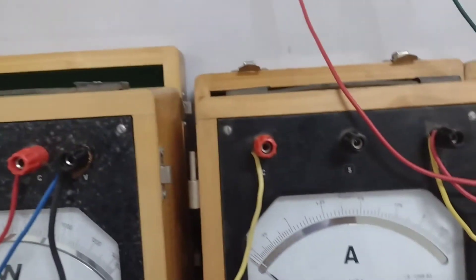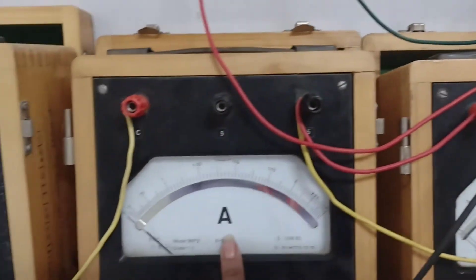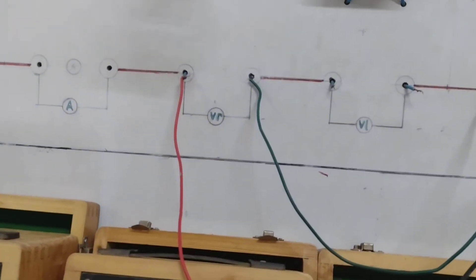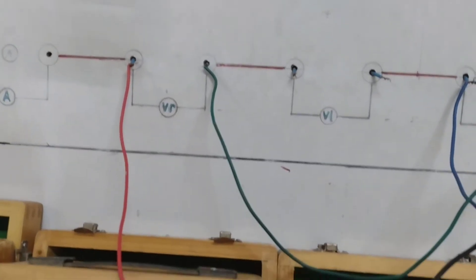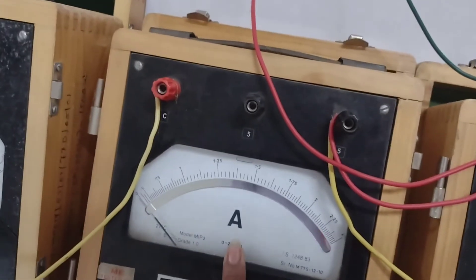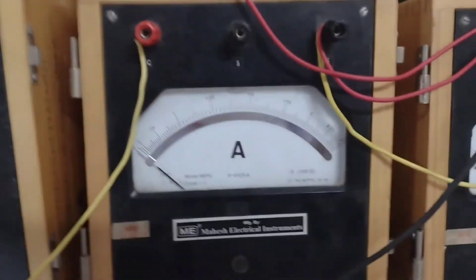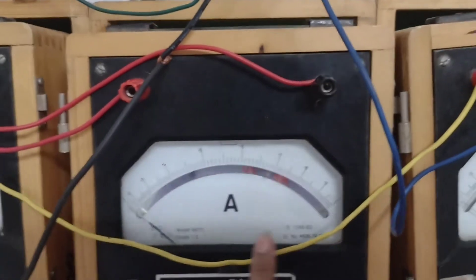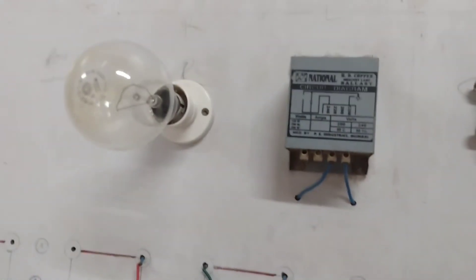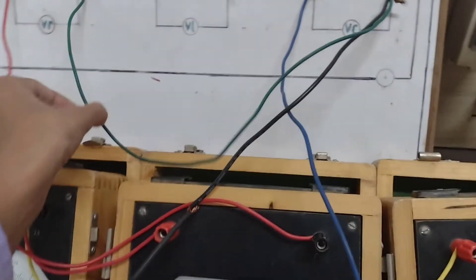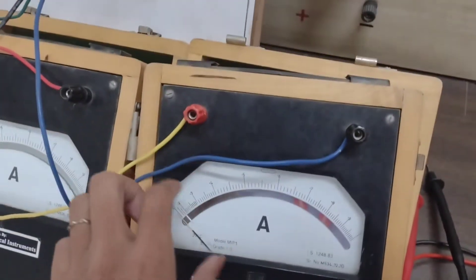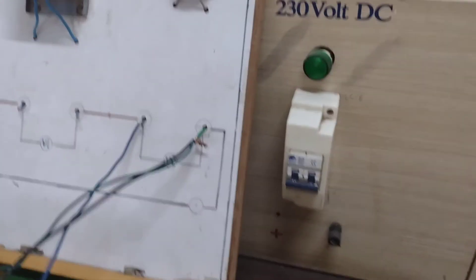The voltmeter shows the supply voltage, the wattmeter shows the power, this ammeter shows the total current I, this ammeter shows IR which is connected in series with the resistive load, and this ammeter shows IC which is connected in series with the capacitive load.